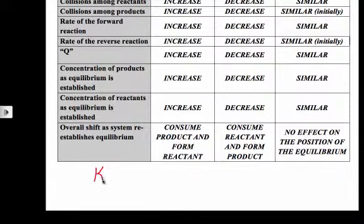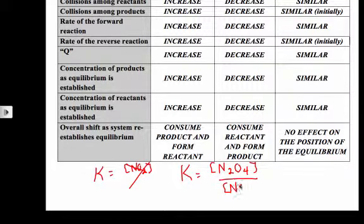So, K was equal to NO2, excuse me, K is equal to N2O4. If I made a mistake earlier, let's correct that. NO2 squared. Okay,